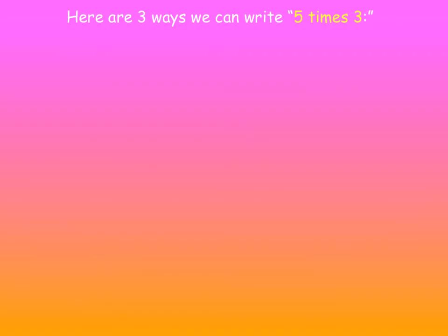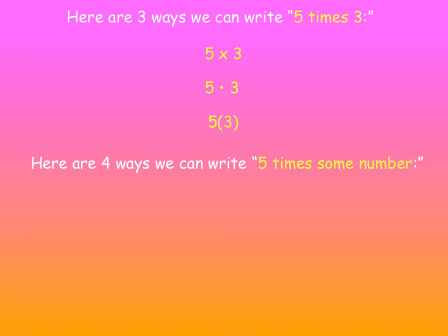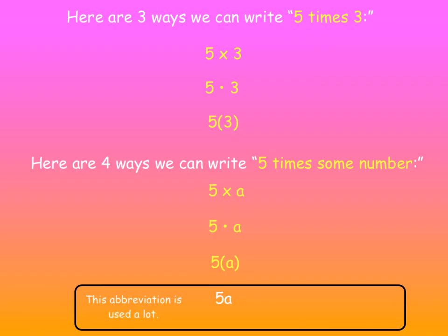Here's three ways we can write 5 times 3: with an X, with a dot, with parentheses. And here's four ways we can write 5 times some number. 5 times A with an X, with a dot, with parentheses, or just 5A. This abbreviation is used a lot. You don't even have to write a multiplication sign. 5A means 5 times some number.